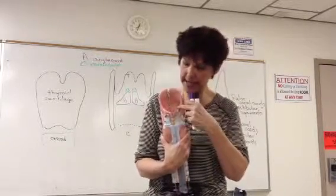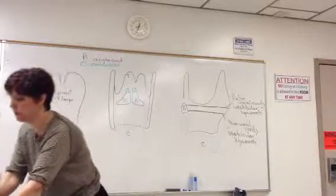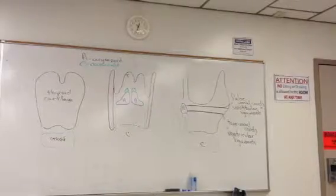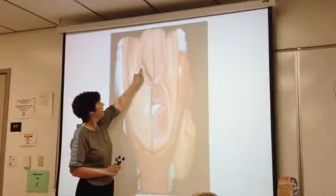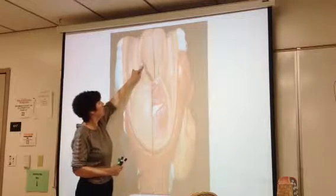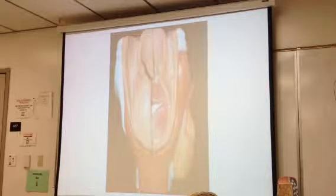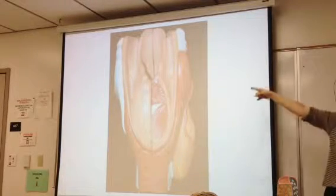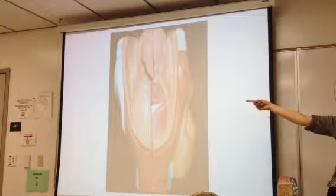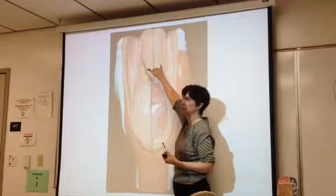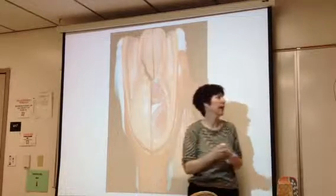There's another bump created by a very slender cartilage — the cuneiform — that you will never actually see as a separate cartilage. This is the only place you will ever see any evidence of cuneiform cartilage. It just creates this bump here along the aryepiglottic fold, and it helps to stabilize that fold.